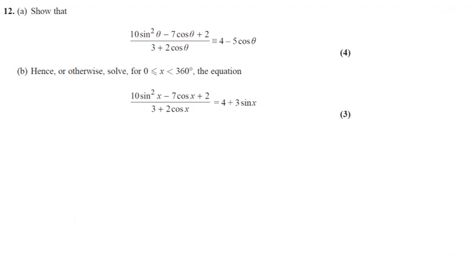So for part B year 12, you've done all of the hard work in part A, which is why it says hence here. We're going to use what we've done in part A to help us. So this whole expression can be written as 4 minus 5 cos x.